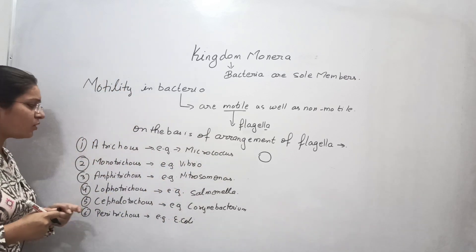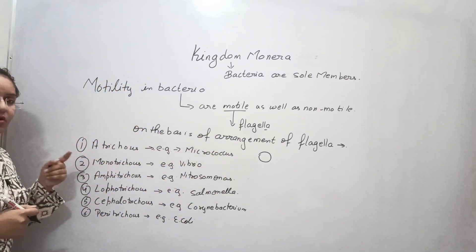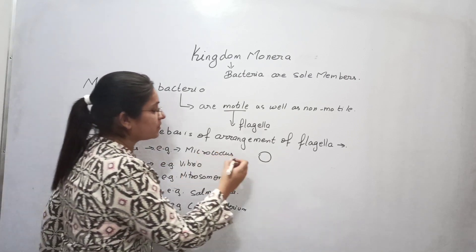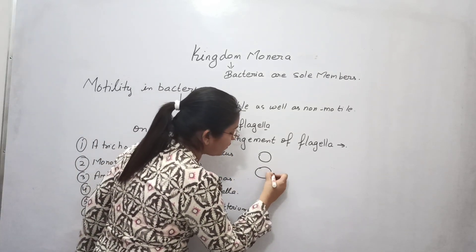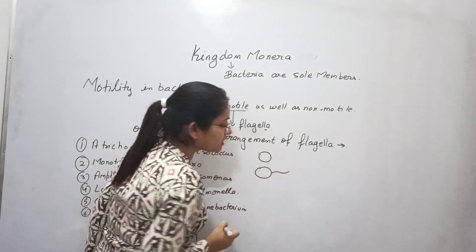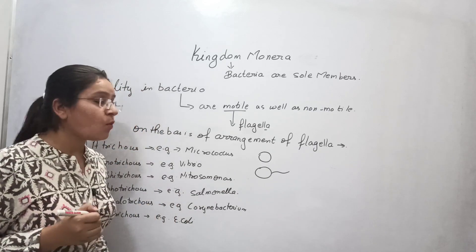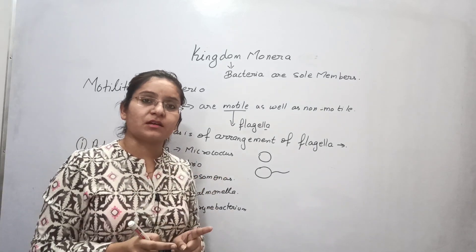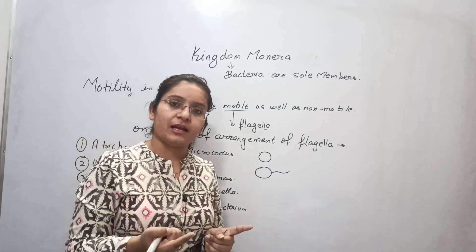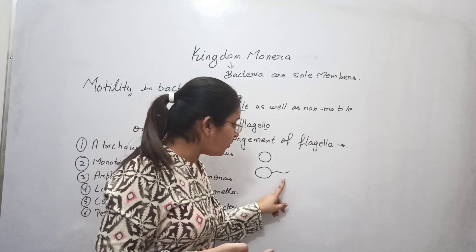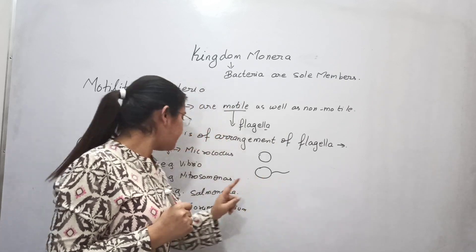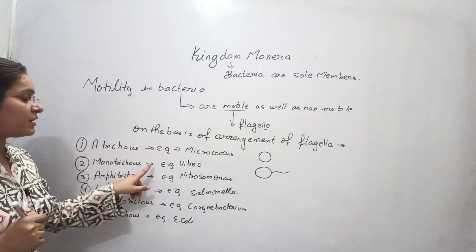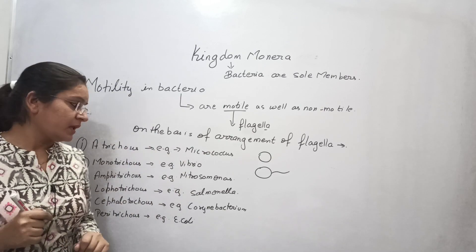Monotrichous bacteria are bacteria having a single flagellum at one end. Flagella is a whip-like structure that helps in the movement of the bacterium. The example of monotrichous bacteria is Vibrio.